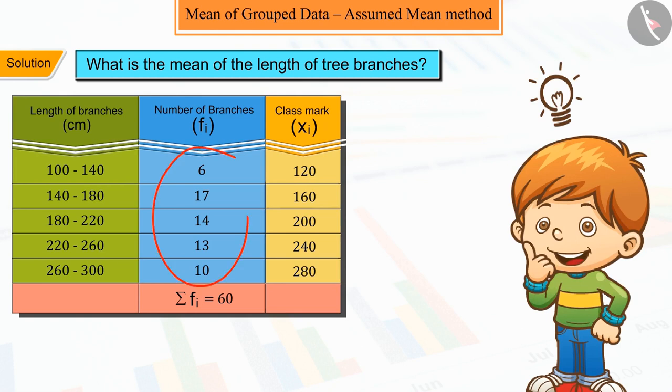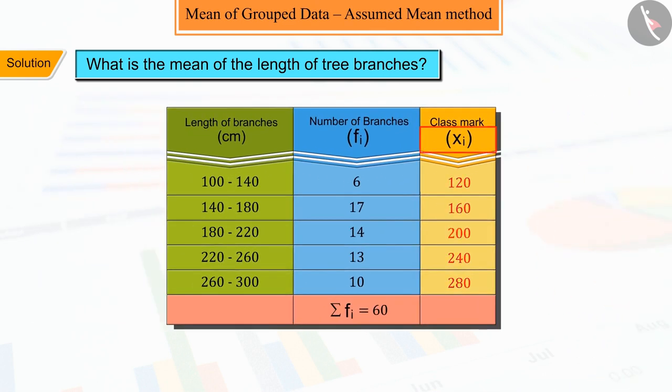Here we cannot do anything with fi but xi can be reduced to a smaller value and hence our calculation becomes easier. So, from the xi obtained, any mean out of xi can be chosen as the assumed mean, which we represent by A. But to further simplify our calculation, we can take an assumed mean A from xi,